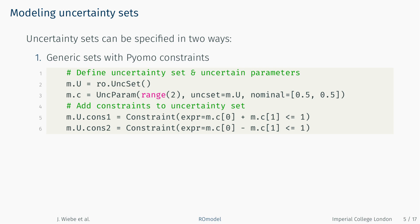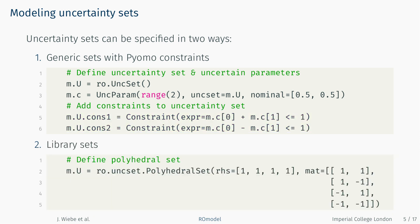Uncertainty sets can be constructed in one of two ways. The first is to use generic uncertainty sets, which are essentially PyOMO blocks to which users can add PyOMO constraints describing the geometry of the uncertainty set. This approach is very flexible and allows the definition of arbitrary convex uncertainty sets. The second way is to use library sets, which are predefined components for modeling common uncertainty set geometries by supplying data matrices, such as a polyhedral set defined by a matrix and a right-hand side vector.